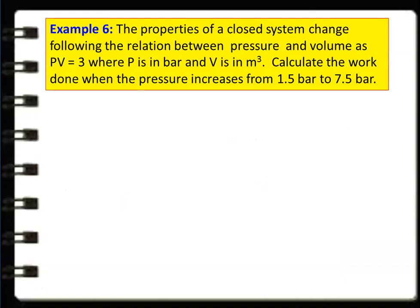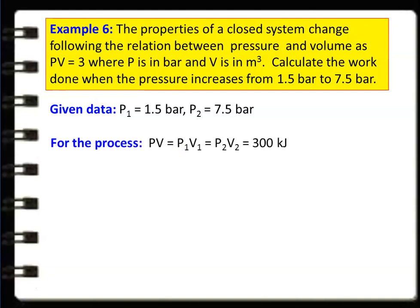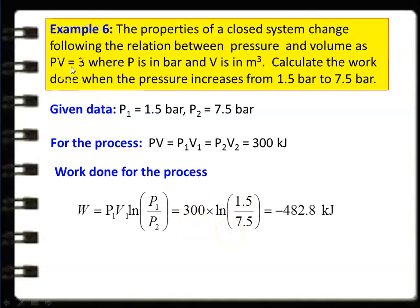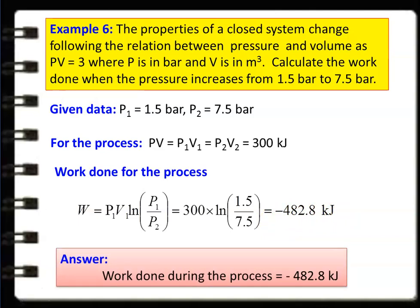Example 6: The properties of a closed system change according to PV = 3, where P is in bar and V is in m³. Calculate the work done when the pressure increases from P1 = 1.5 bar to P2 = 7.5 bar. Since PV = constant, this is an isothermal process. P1V1 = 3, so this equals 300 kJ (converting bar to Nm). Work done = P1V1 × ln(P1/P2) = 300 × ln(1.5/7.5) = −482.8 kJ.